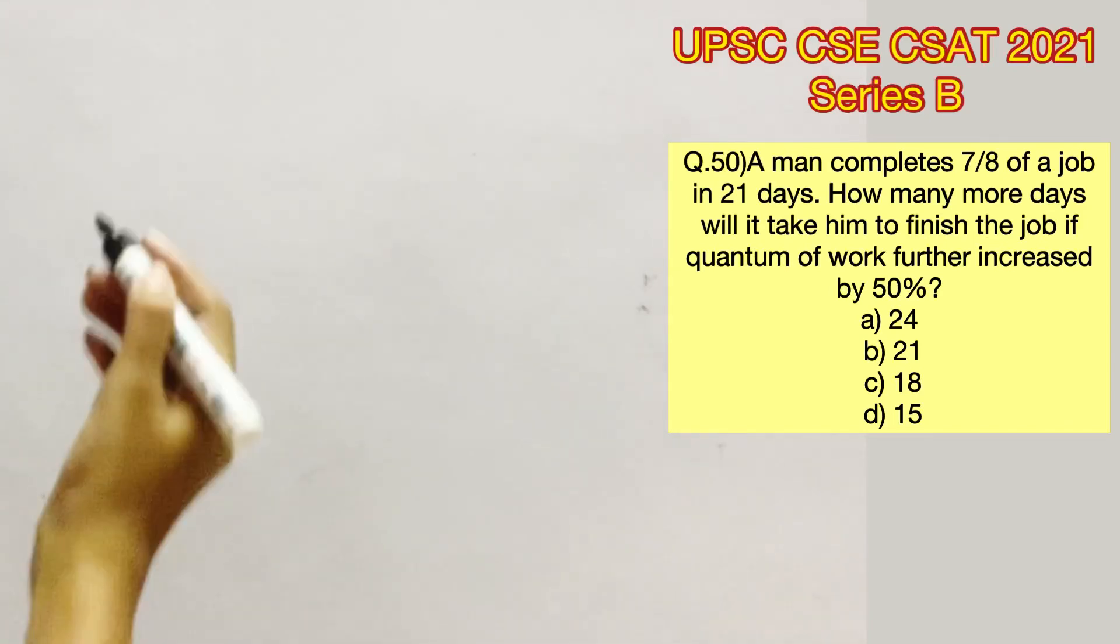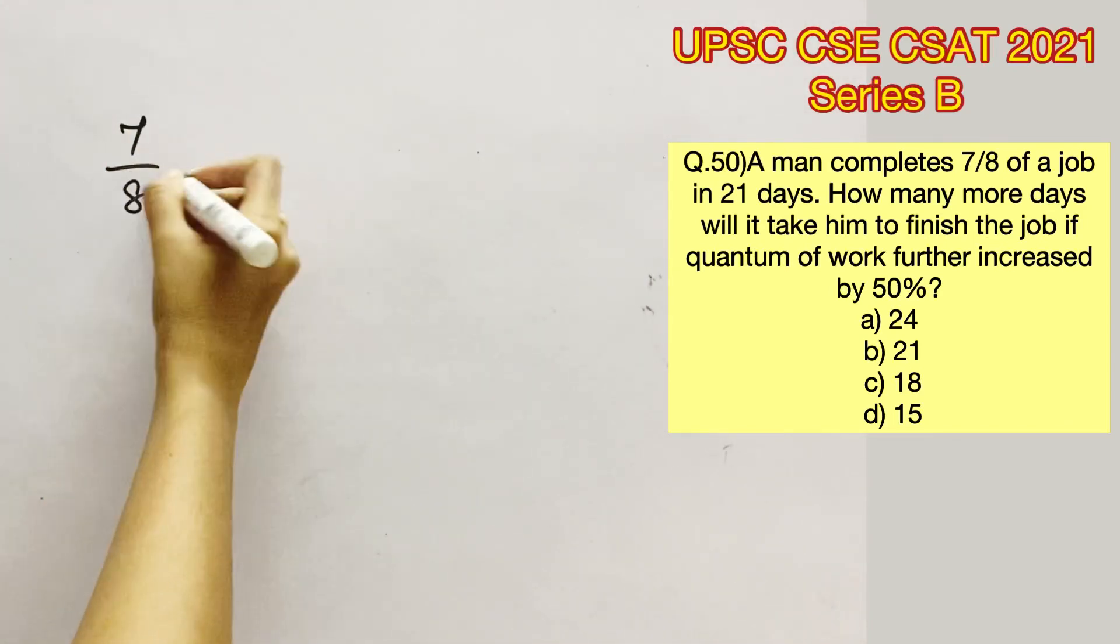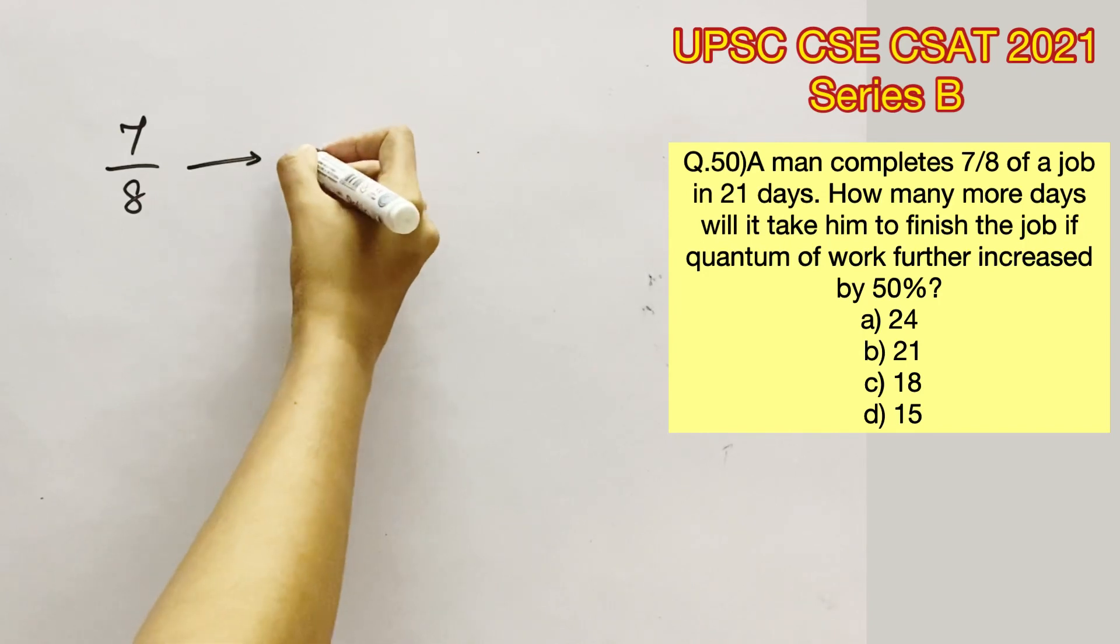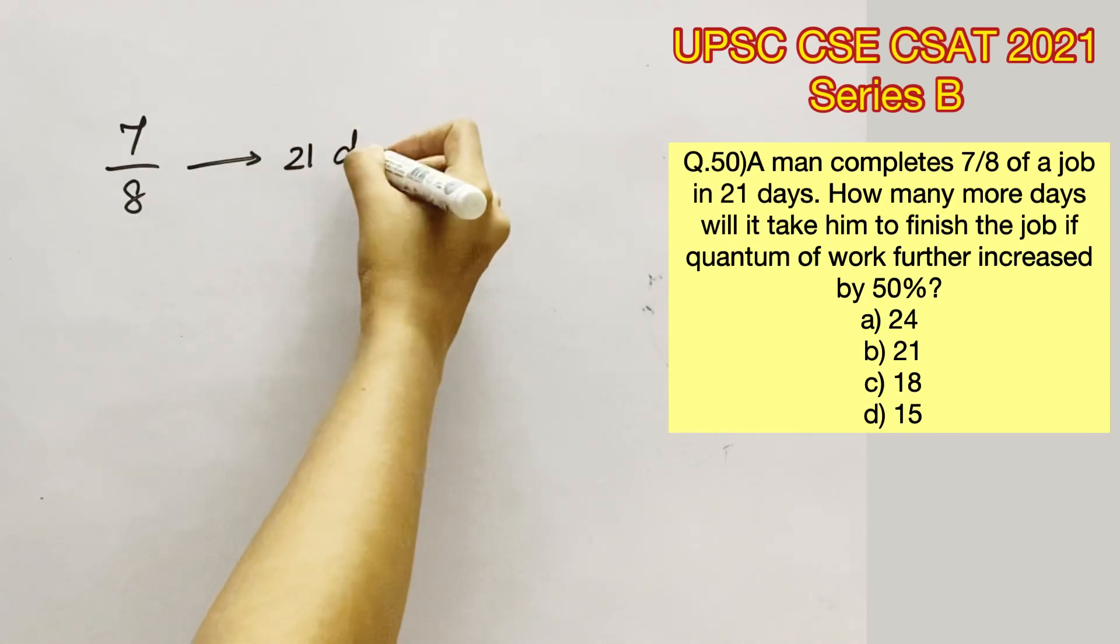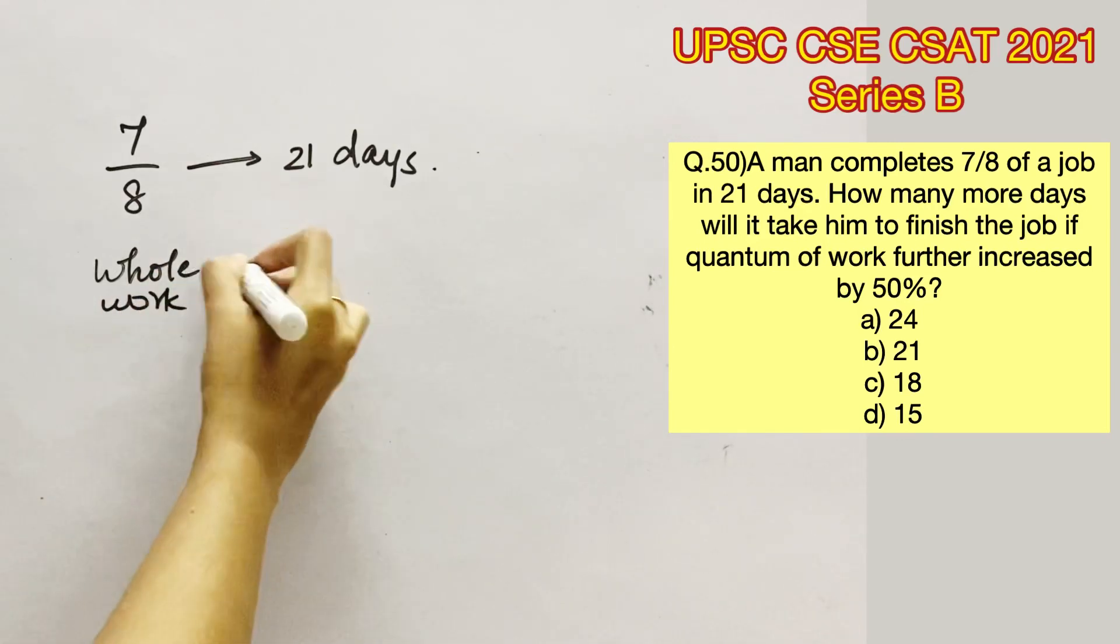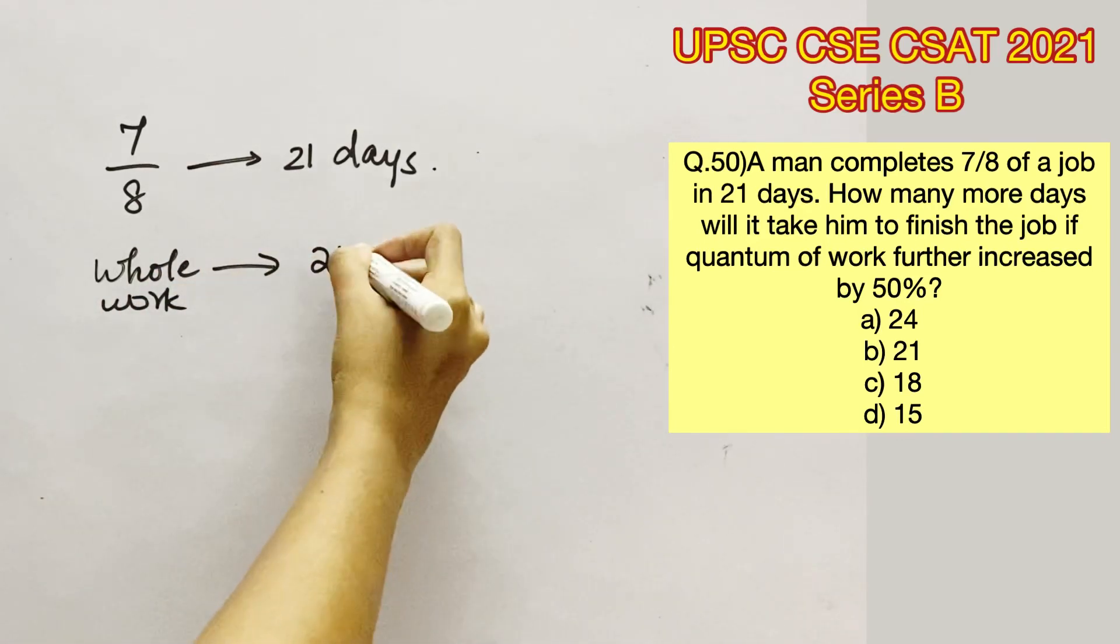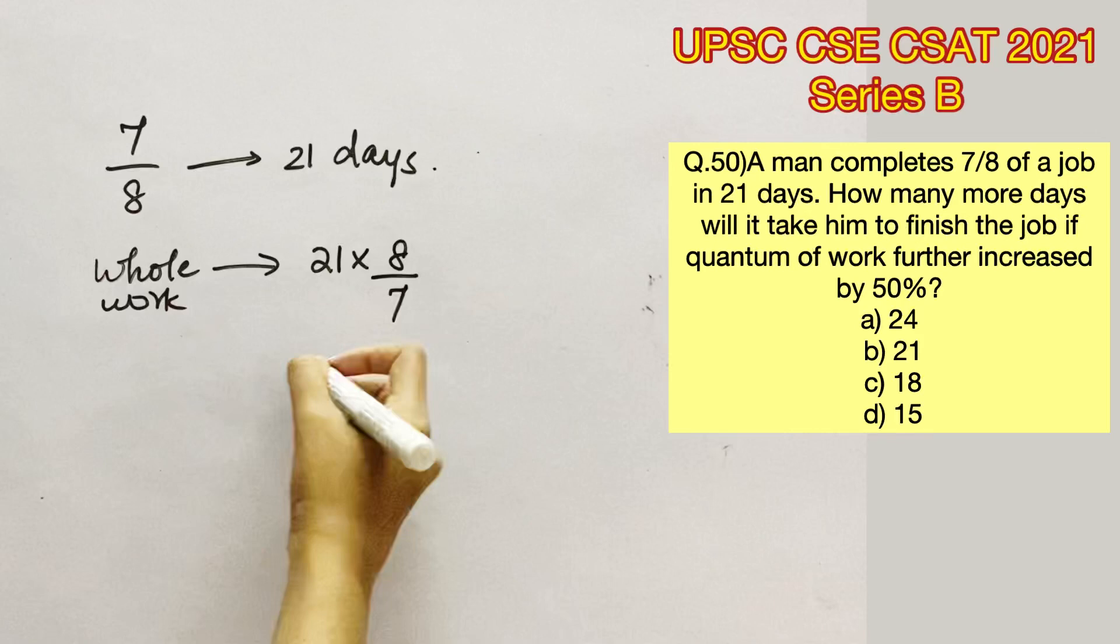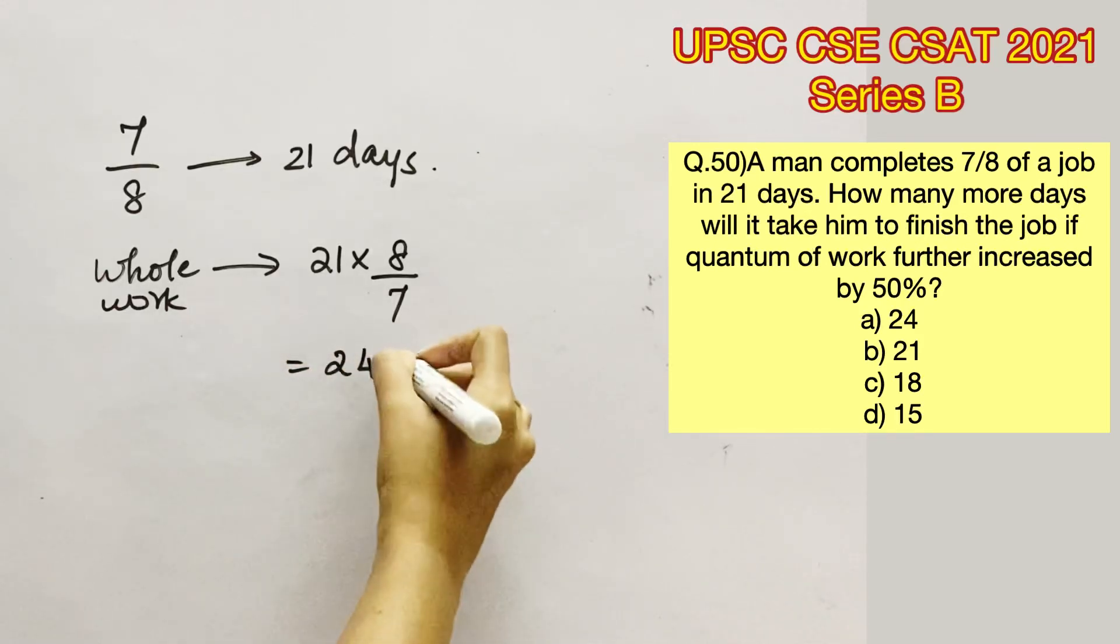Welcome to Aptitude Destination. Please pause the video and read the question completely. A man completes seven-eighths of a job in 21 days, which means that he will complete his whole work in 21 times 8 by 7 days, which is 24 days.